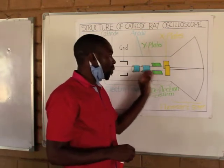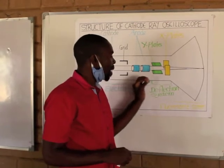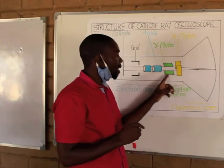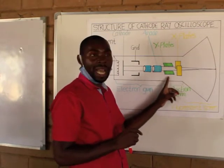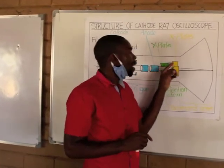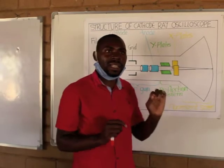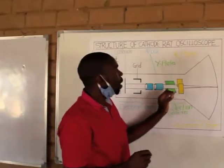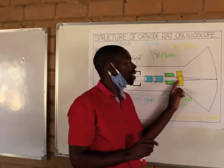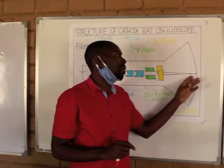Away from that, we have the Y-plates. When the beam of electrons reaches the Y-plates, the Y-plates will deflect these rays up or down. And as the electrons are deflecting up or down, they will reach the X-plates. The function of the X-plates is to deflect the beam of electrons left or right, and then further focus them on the screen.